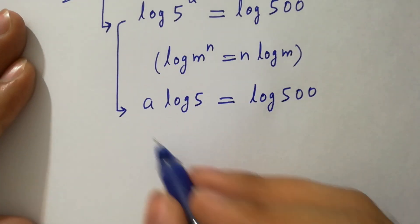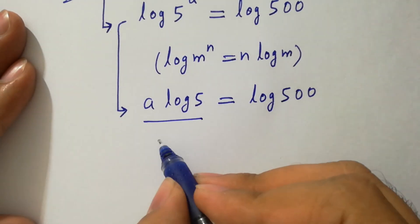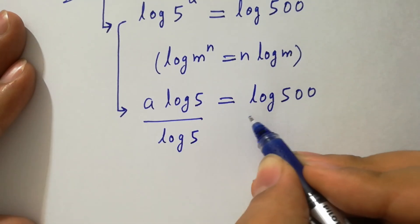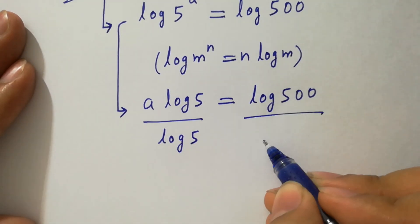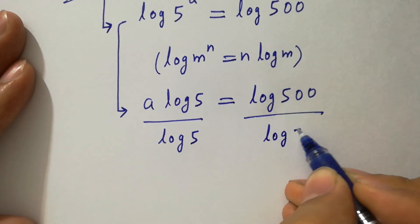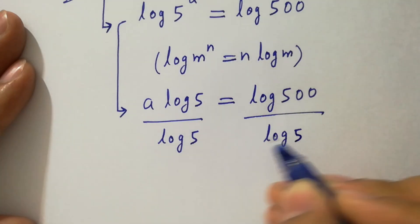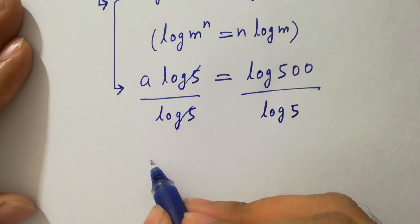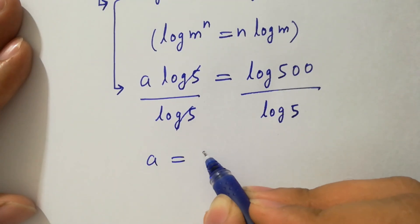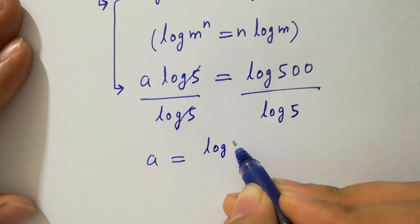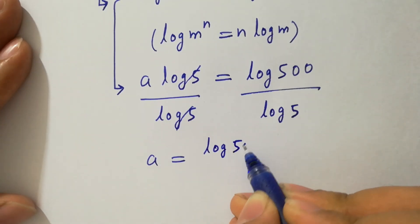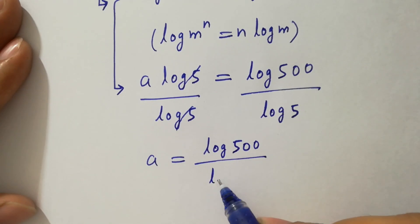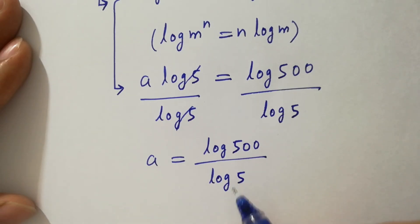To find a, divide by log 5 on both sides. Log 5 cancels, so a equals log 500 over log 5.